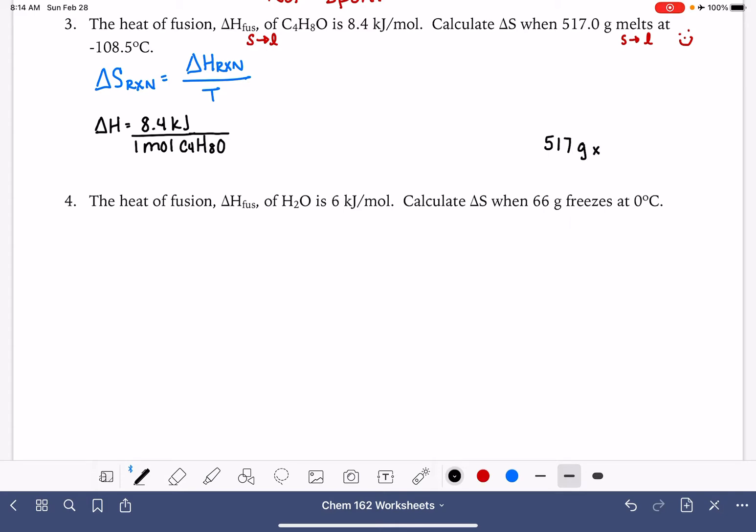We have 517 grams of this substance, and its molecular weight is 72 grams per mole. I'm doing this calculation for the C4H8O. So we're going to figure out how many moles we have. It looks like it's definitely more than one. So 517 divided by 72 is 7.18 moles, not one mole.